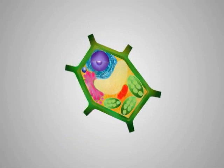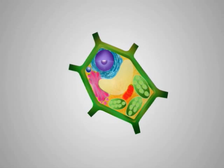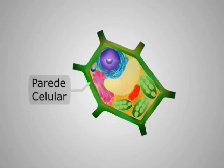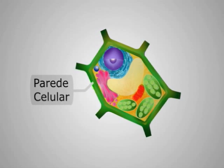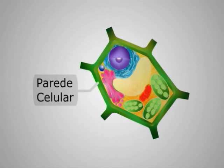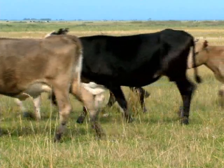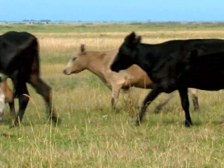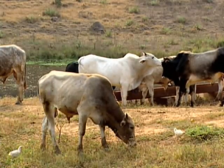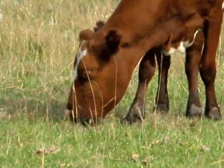A celulose é o que confere proteção e sustentação a uma célula vegetal. É ela também que torna um vegetal tão resistente à digestão dos animais que deles se alimentam. Apenas alguns micro-organismos, como os que estão presentes no sistema digestivo dos animais ruminantes, conseguem digerir a celulose.